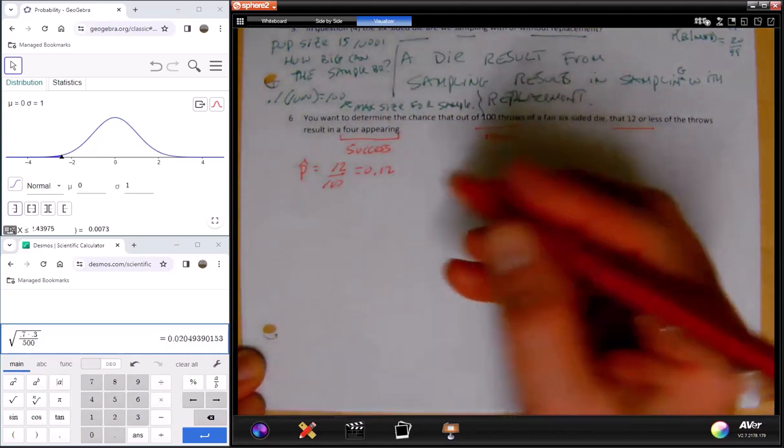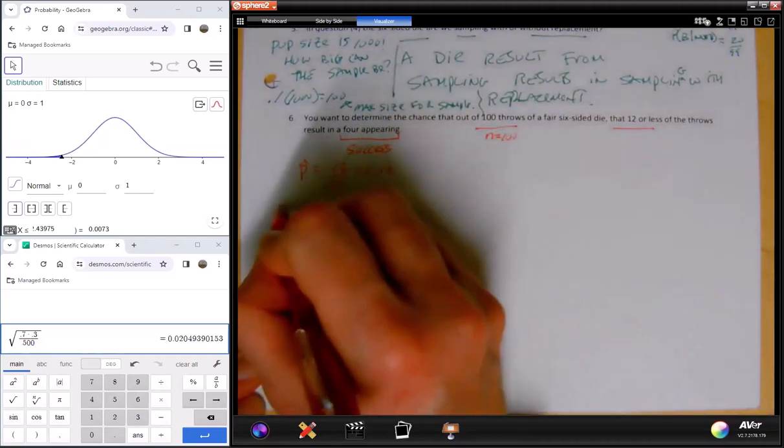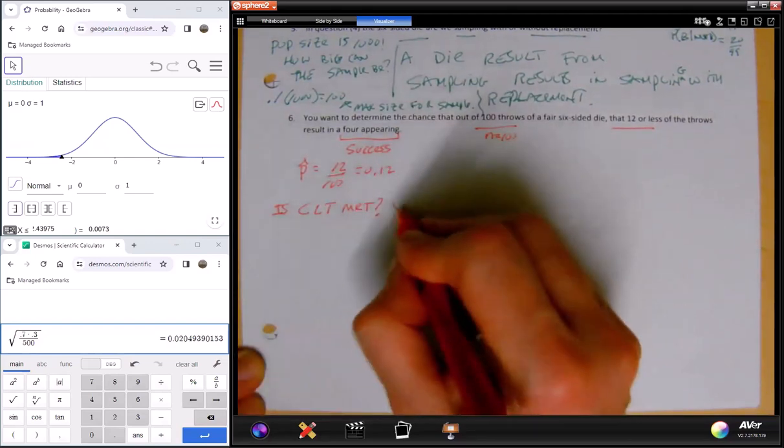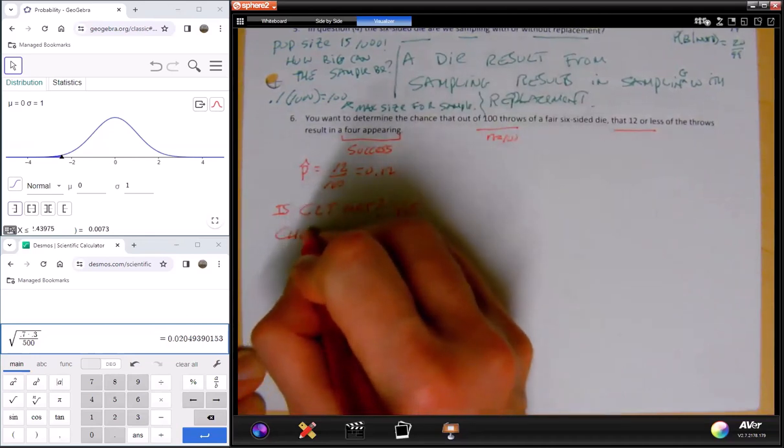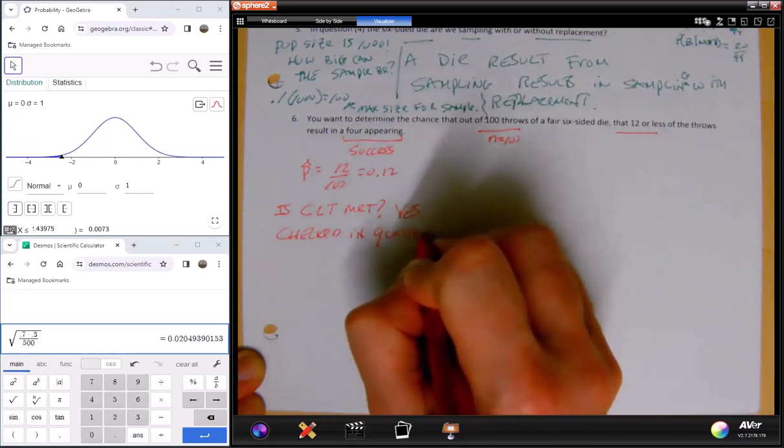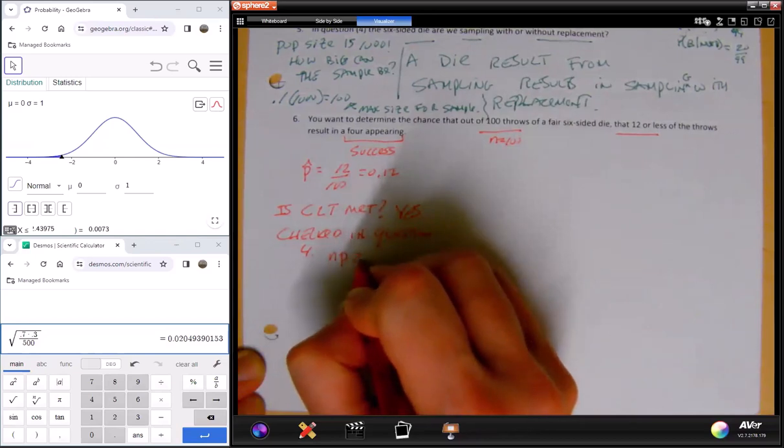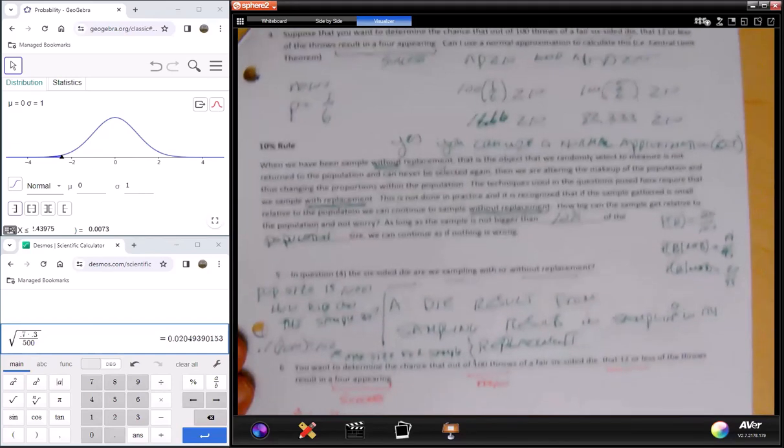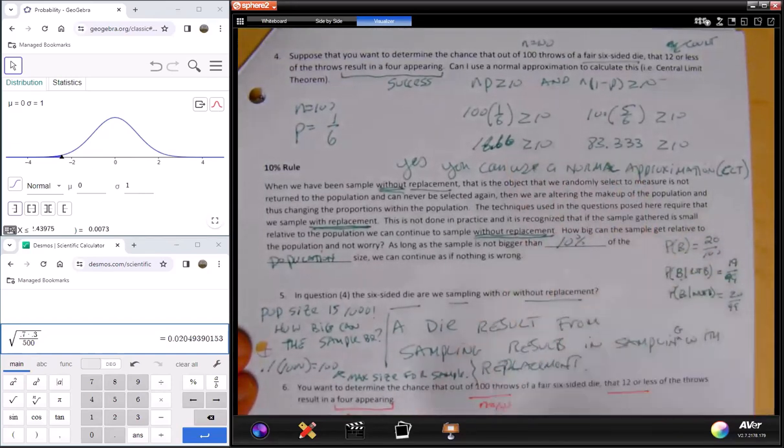Now, how are we going to do this? Is CLT met? And the answer is yes, because we checked already in question four. In other words, I met this criteria right here. So that was met, and that's what we did above. We both got bigger than 10, perfect.